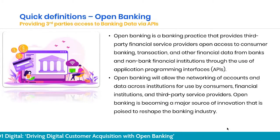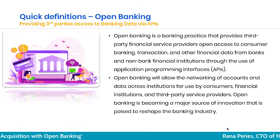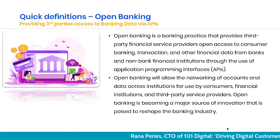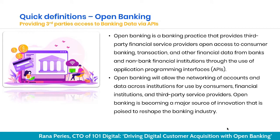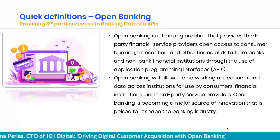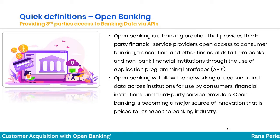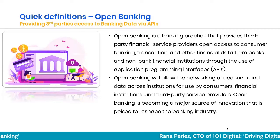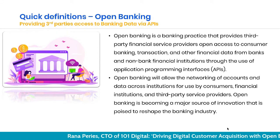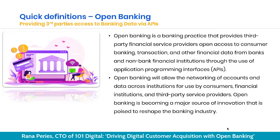Banks have traditionally invested in omnichannel experiences, whereas the most successful digital business models are ecosystem business models — where if somebody is likely to apply for a home loan or mortgage while searching for property, you create that ecosystem experience through APIs and data. Open banking and open data enable banks and other organizations to share data using standard and secure APIs, which are key ingredients making those ecosystem experiences possible. Open banking is thus a key foundation for ecosystem business models.